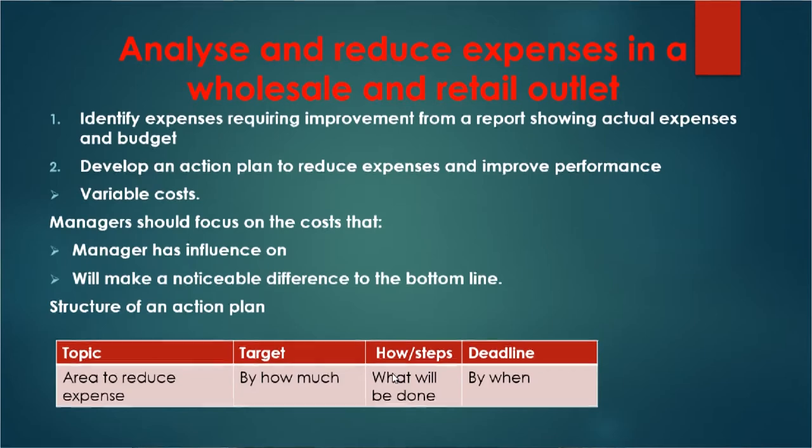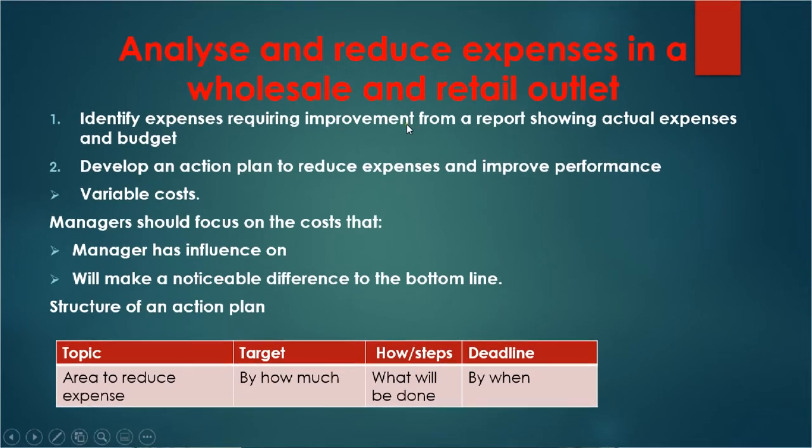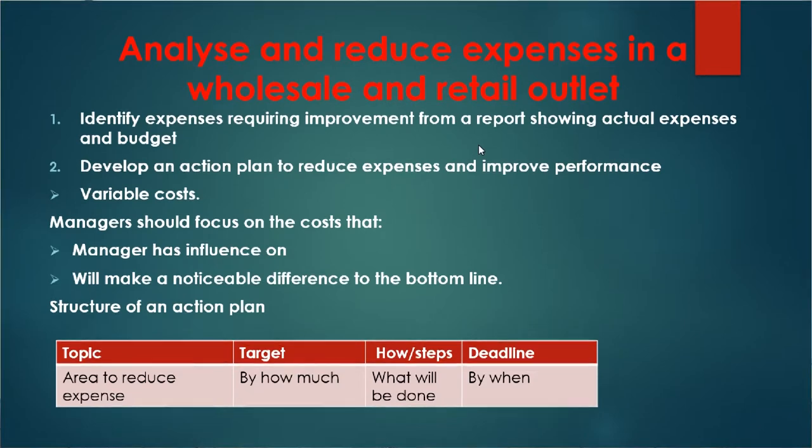Now let's analyze and reduce expenses in a wholesale and retail outlet. You need to identify the expenses that require improvement. Businesses incur a number of expenses, including rent, salaries and wages, electricity, water, insurance, and so on. We should try to manage them in such a way that they don't affect the profitability of the business — in other words, keep these expenses at the minimum. You need to identify which expenses require improvement from budget reports and monitoring, and then develop an action plan to reduce expenses and improve performance.